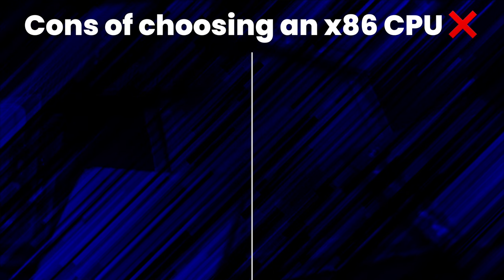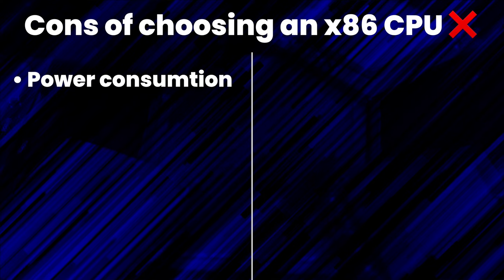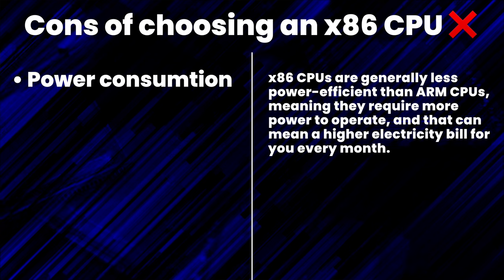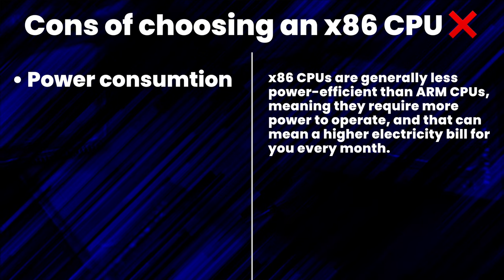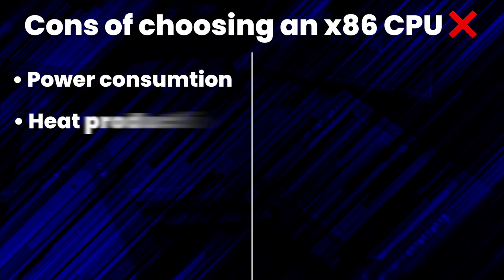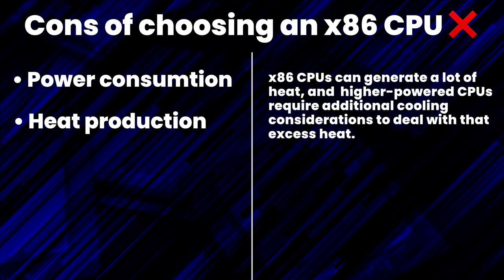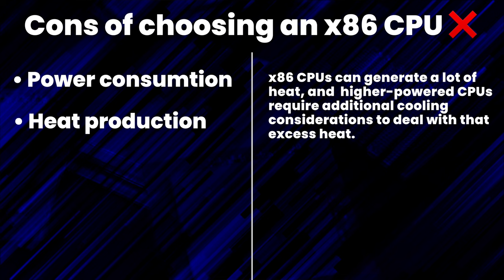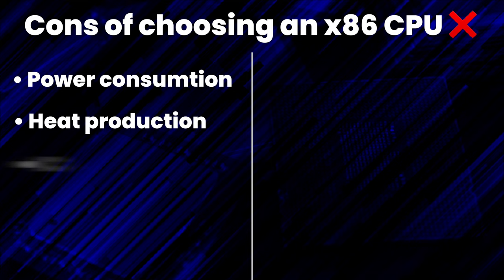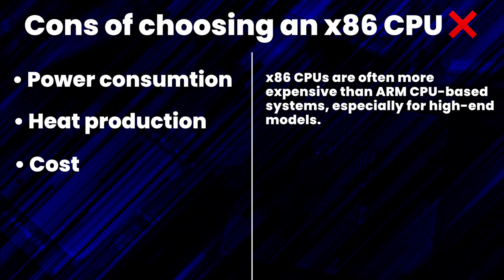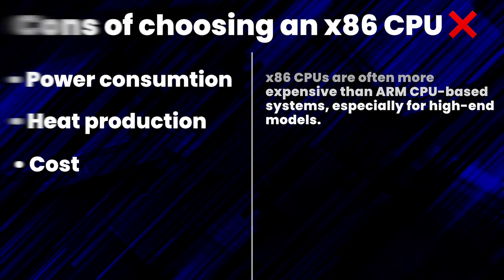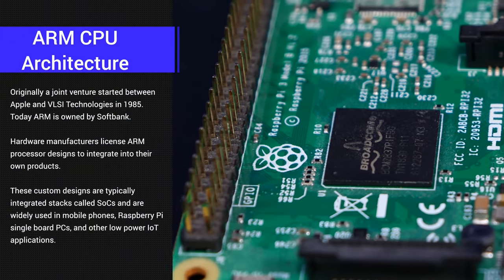Now let's talk about the cons. The first con is power consumption: x86 CPUs are generally less power-efficient than ARM CPUs, which means they require more power to operate, and that can mean a higher electricity bill every month. The second con is heat production: x86 CPUs can generate a lot of heat, and higher powered CPUs require additional cooling considerations. And finally, cost: x86 CPUs are often more expensive than ARM CPU-based systems, especially for higher-end models.